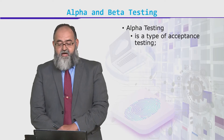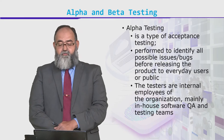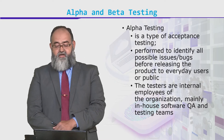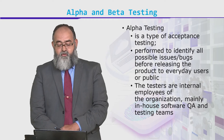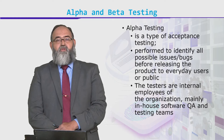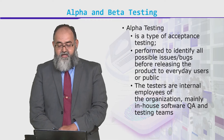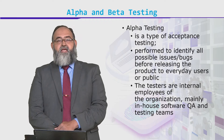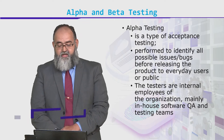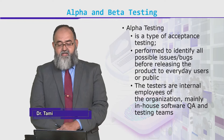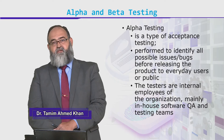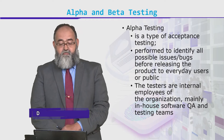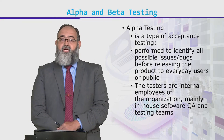Alpha testing is a type of acceptance testing performed to identify all possible issues and bugs before releasing it to the actual user — to the everyday user or to the public. Testers are internal employees of the organization, mainly QA engineers, software testers residing within the organization. So they are the actual representative of the user, but this is not the user itself.